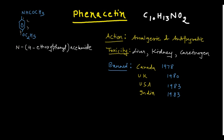The IUPAC name: we write N-dash, then open parenthesis. At position number four you have the ethoxy substitution on the phenyl ring, so this is N-(4-ethoxyphenyl). It is a derivative of acetamide, CH3CONH2, so we write acetamide. Therefore the IUPAC name is N-(4-ethoxyphenyl)acetamide. Phenacetin is the common name, and you can verify the molecular formula by counting the carbons, hydrogens, and oxygens.